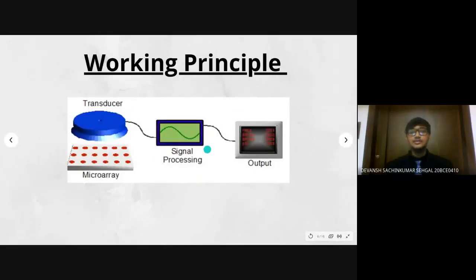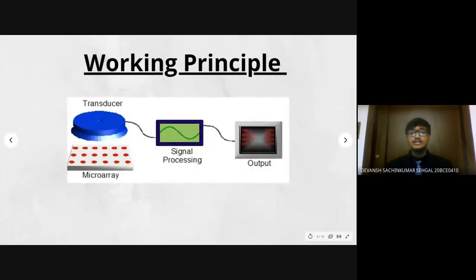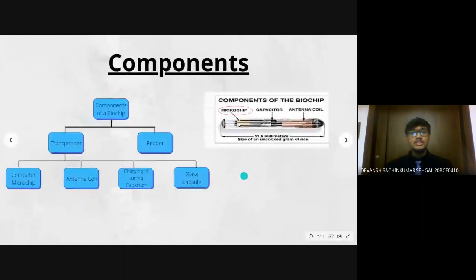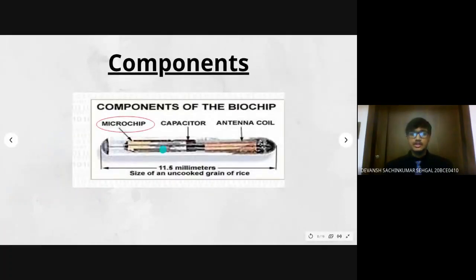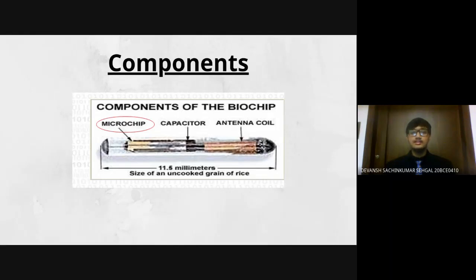Let's discuss the components and working principles behind biochips. Biochips require microarray technology, transduction and signal processing technologies to output the research and results of sensing experiments. A biochip comprises two main components: a transponder and a reader. Transponders are usually of two types, namely active transponder and passive transponder. The biochip you see in front of the screen is a passive transponder, meaning it does not contain any energy of its own and is not active until the operator activates it by giving it a low electrical charge. This transponder consists of four parts: the antenna coil, the capacitor, the microchip and the glass casing.